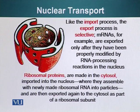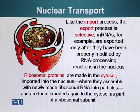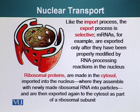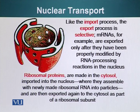Like the import process, the export process is selective. Messenger RNAs are exported only after they have been properly modified by RNA processing reactions in the nucleus. There is an immature pre-messenger RNA which goes through an editing process: introns are removed, and only the mature RNA is allowed to leave. Immature pre-messenger RNA is never allowed to leave the nucleus. Ribosomal proteins are made in the cytosol, imported into the nucleus where they assemble with newly made ribosomal RNA into particles, and then exported again to the cytosol as part of a ribosomal subunit.